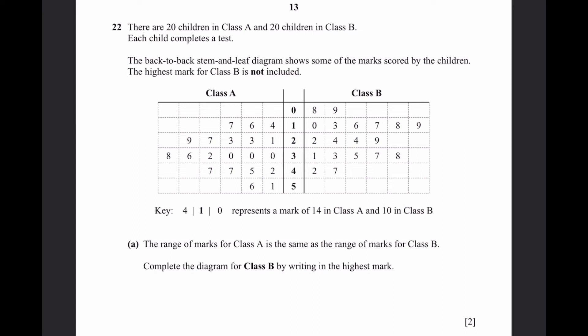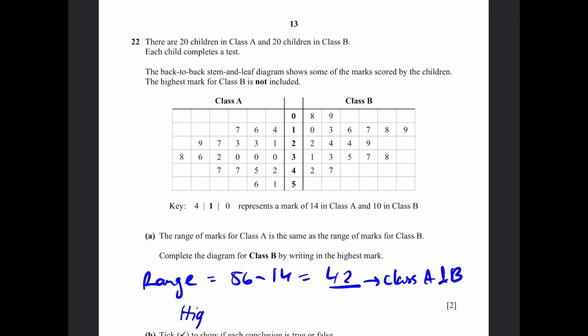Question 22. There are 20 children in class A and 20 in class B. Each child completes a test. The back-to-back stem and leaf diagram shows some of the marks scored by the children. The highest mark for class B is not included. A. The range of marks for class A is the same as range of marks for class B. Complete the diagram for class B by writing in the highest mark. For class A, the range of marks is going to be the highest minus lowest. 56 minus 14. So, the range is equal to 56 minus 14, which is 42. This is the same for class A and B. That's what's given in the question. And now, to get a range of 42 for class B, we have the smallest value 0, 8. And the highest mark for class B is going to be equal to 42 plus the smallest value 8, which is 50. Now, you can just add that in the stem and leaf diagram. Under the 5 row, we can write a 0 over here.